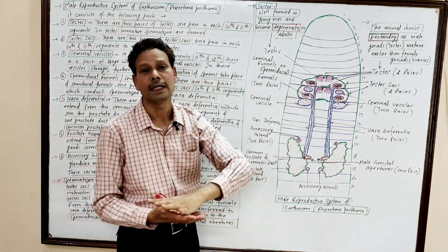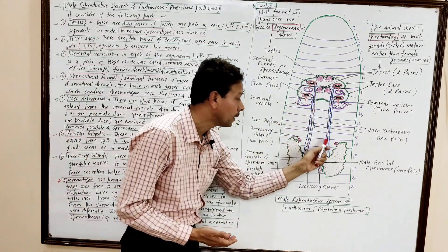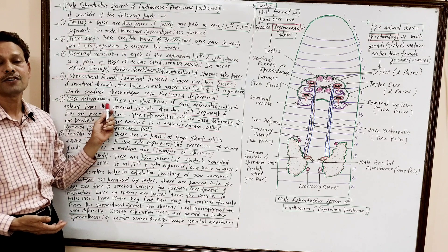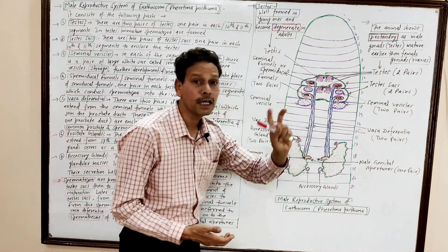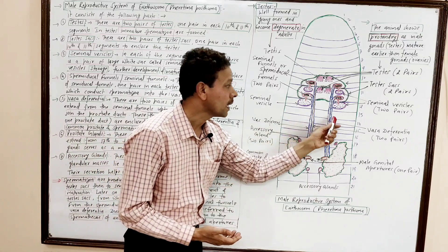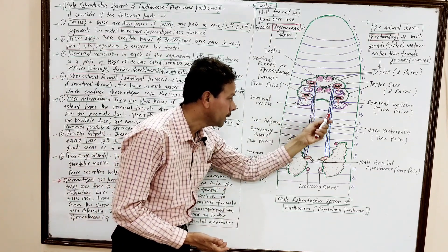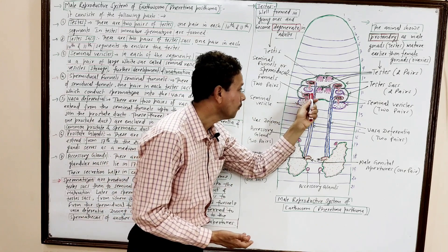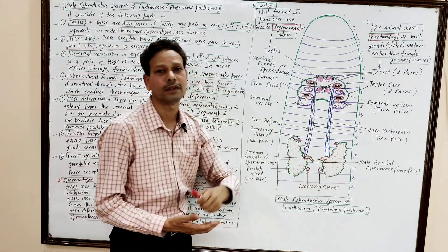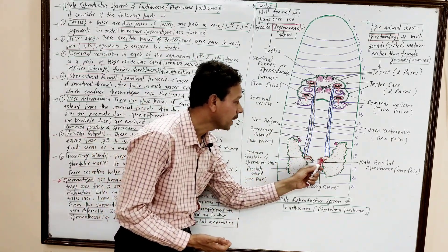From these semiducal funnels or seminal funnels, sperms are conducted into the sperm ducts. These sperm ducts are the vasa deferentia. These are two pairs of ducts which extend from the seminal funnels up to segment number 18.